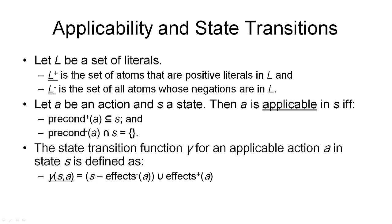What we still need to formally define is when an action is applicable in a state, and what the corresponding state transition is. To do this, I will first introduce a little notation. Suppose we are given a set L of literals — these are positive and negative atoms. I can use the symbol L-plus to refer to those atoms that are positive in L, and L-minus to refer to those atoms whose negations are in L. So L-plus and L-minus are sets of atoms, those that are positive and negative in L respectively.